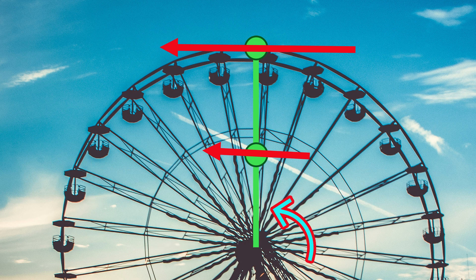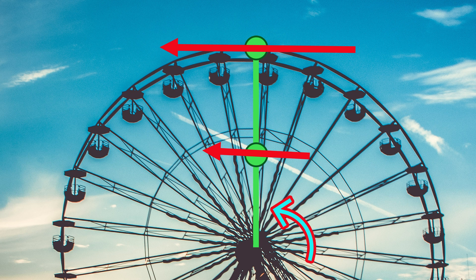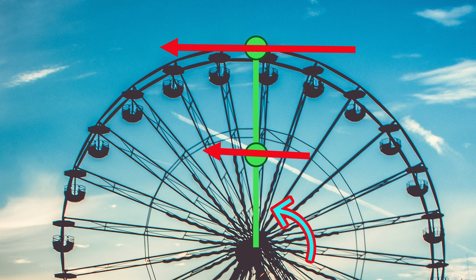Therefore we can conclude that for our two blobs sitting on the same radius that their angular velocity is the same but their instantaneous velocity is different depending on how big the radius is.